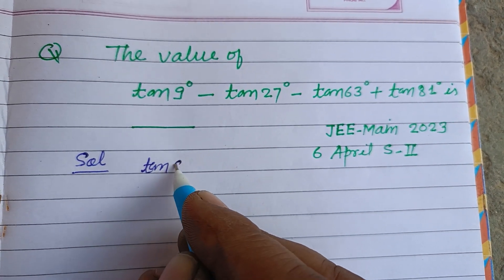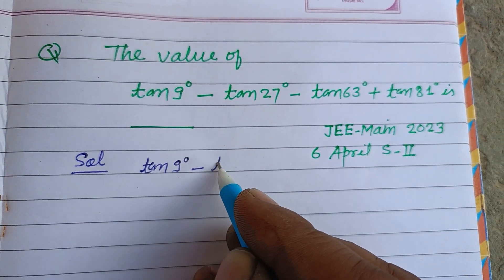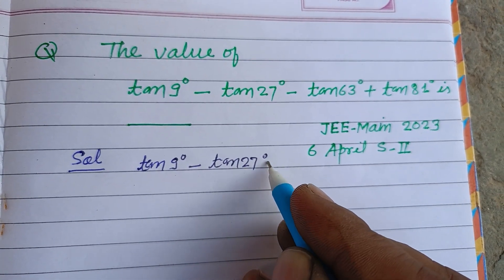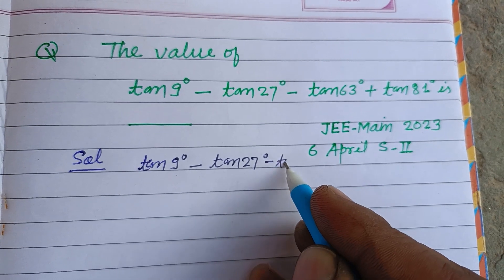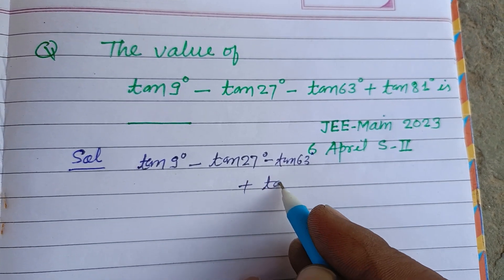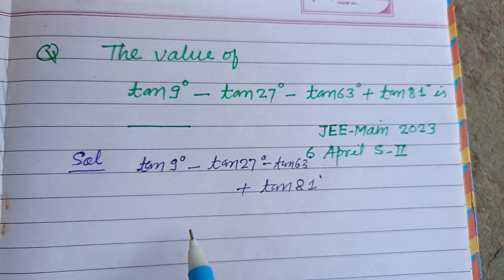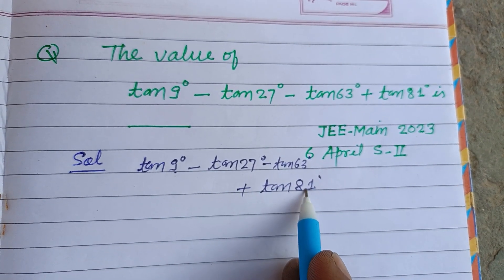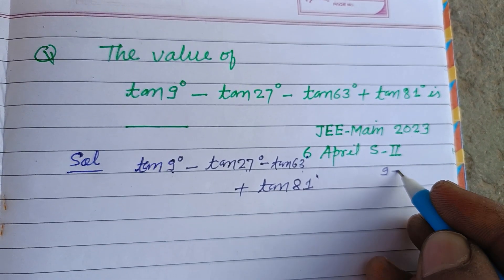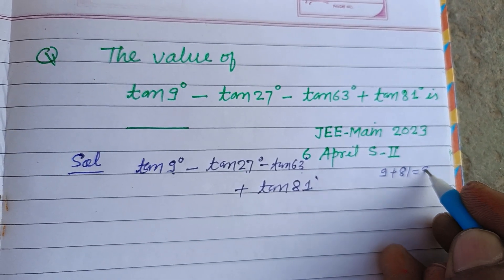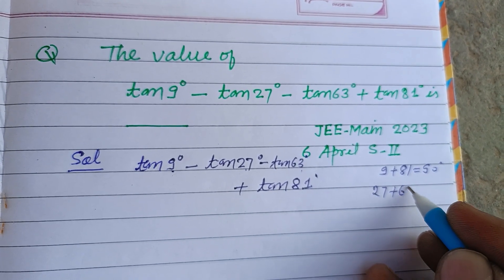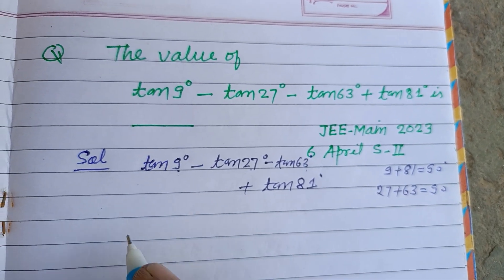So tan9° minus tan27° minus tan63° plus tan81°. Here 9 and 81 are complementary to each other, and 27 and 63 are complementary to each other, since 9 plus 81 equals 90 and 27 plus 63 is also 90.